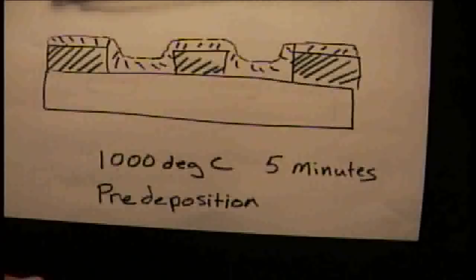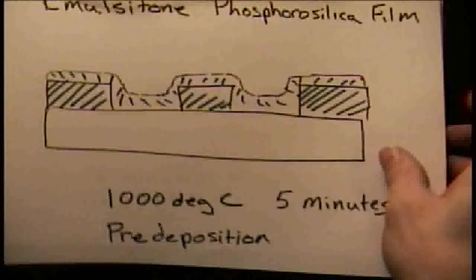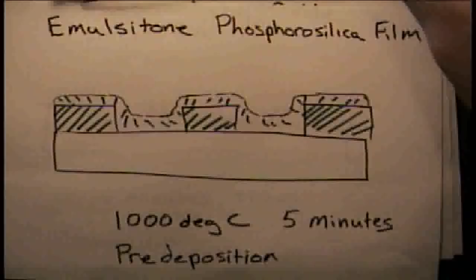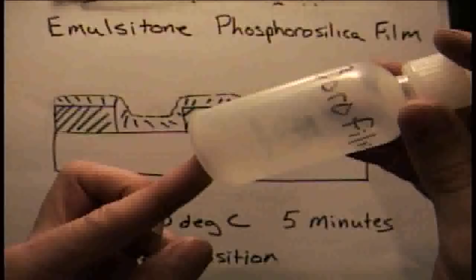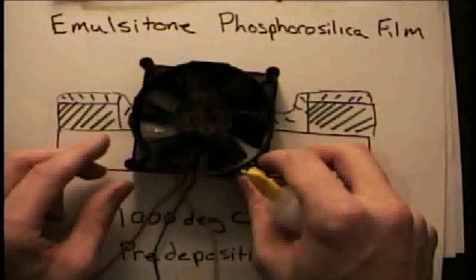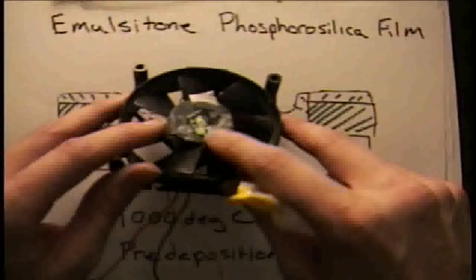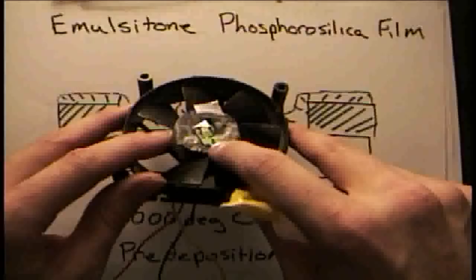The next step is spinning the phosphosilicate film onto the wafer. It's a very thin fluid you can spin onto the wafer by using a CPU fan that has double stick tape on it. You stick the wafer piece onto the fan and apply this liquid.